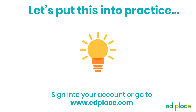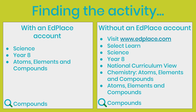In a moment, I'm going to direct you to an activity to practise what we've just learned. Please log in to your EdPlace account or go to www.edplace.com. The activity we're looking for is called 'Compounds'. Whether you have an EdPlace account or not, the path is very similar. Those with an account go straight to Science; those without go to the Learn tab, then Science. After this, the route is the same: go to Year 8, select the curriculum tab, then Chemistry — Atoms, Elements and Compounds — and find the activity titled 'Compounds'. If you're struggling to find it, please visit our support site for a quick walkthrough.